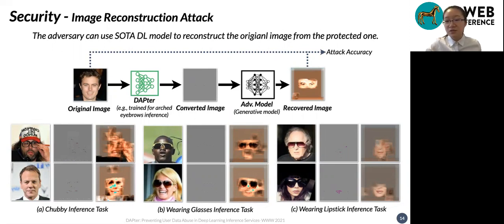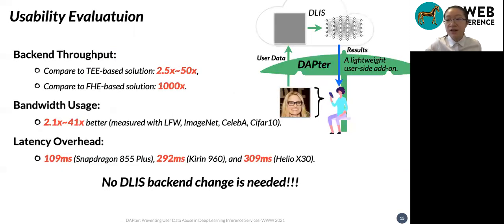To further verify these results, we also asked five volunteers to perform a pairing task. Each person was asked to label 100 reconstructed images with attributes not related to the targeted task. In the end, there were no successful cases. We also evaluate DAPTOR's usability in terms of backend throughput, bandwidth usage, and latency overhead. Our results show that DAPTOR is very efficient, and there is no change in the deep learning inference backend at all.